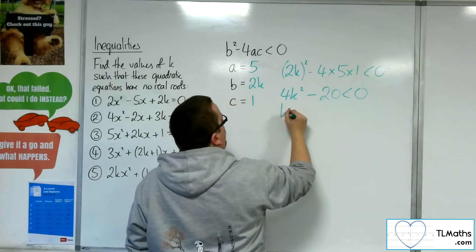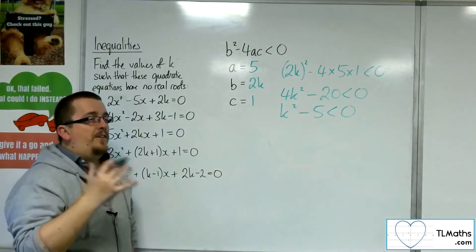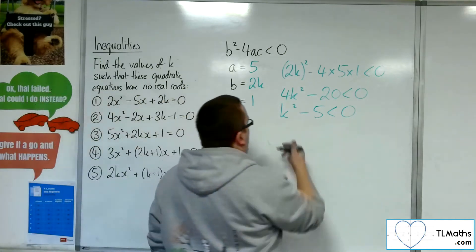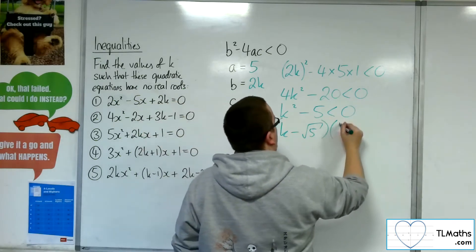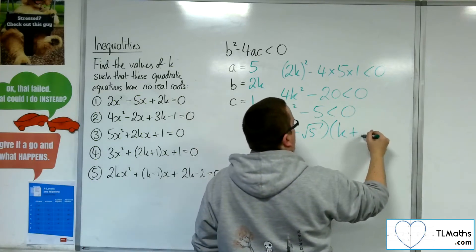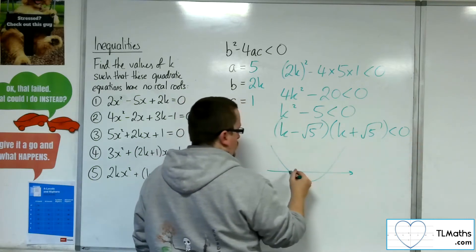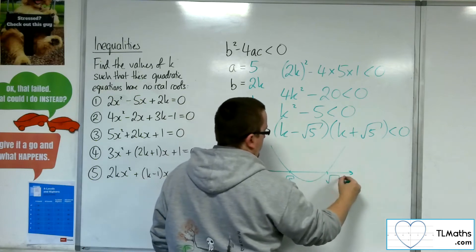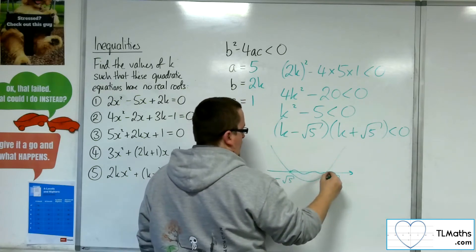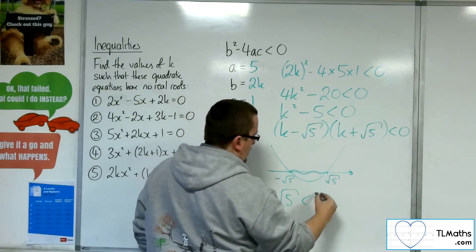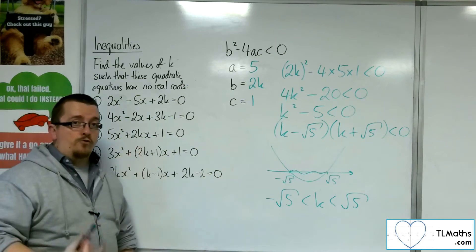Divide everything through by 4, so k squared take away 5 is less than 0. Now, using difference of two squares — I know 5 is not a square number, but it makes it easier to visualise — that would be (k minus root 5)(k plus root 5), and that's got to be negative. This is a parabola crossing through negative root 5 and positive root 5. Where is the parabola below the k-axis? It's below it between those values. So k has got to be between minus root 5 and positive root 5 for that quadratic equation to have no real roots.